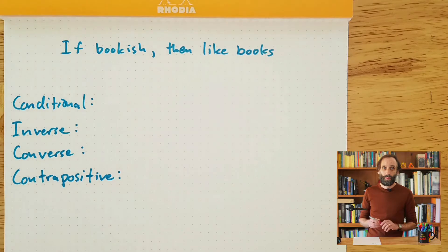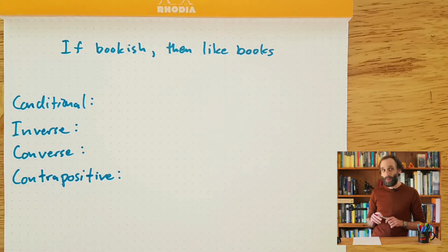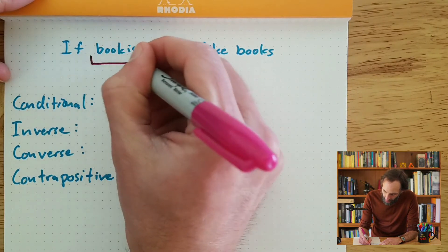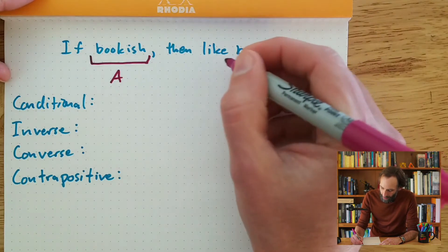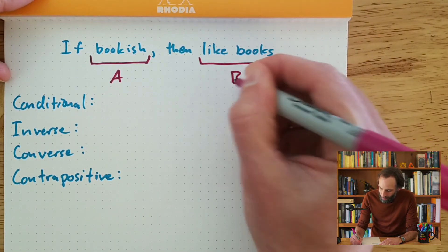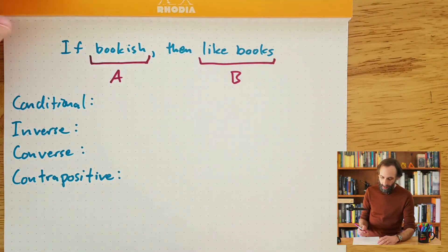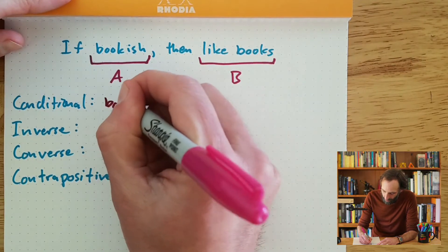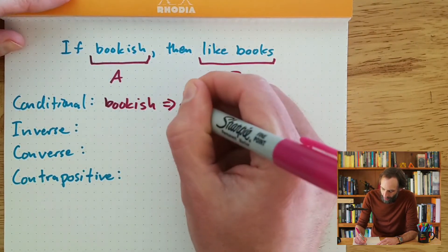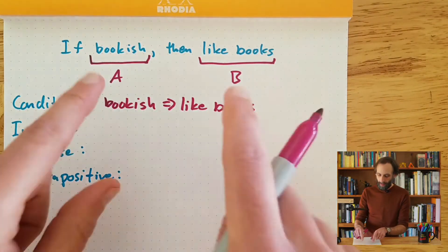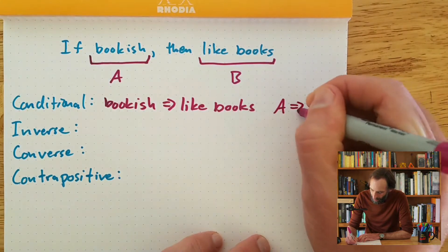Let's take some time to unpack this further by looking at the symbols we can use to express these things. Here is the conditional statement we're working with, and we're going to label the two parts using variables. The first part — the if part — I'll call A. The second part — the then part — I'll call B. So A is that you're bookish and B is that you like books. The original conditional is: bookish implies that you like books, written symbolically as A implies B. This little symbol looks like an equal sign with an arrow at one end — that symbol means 'implies.'